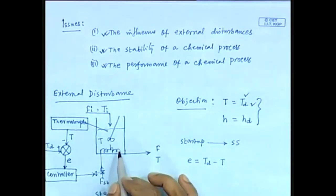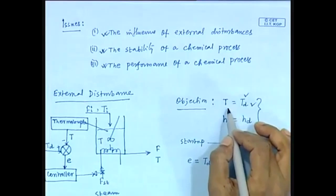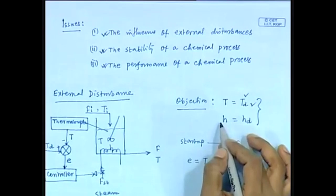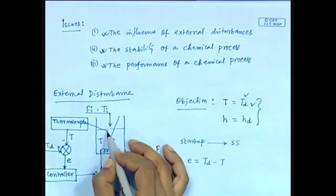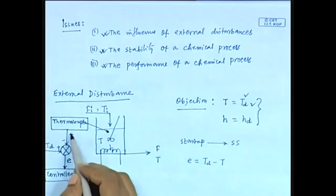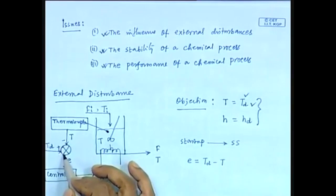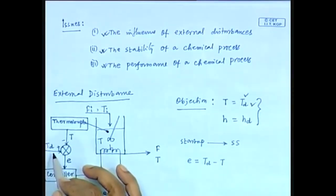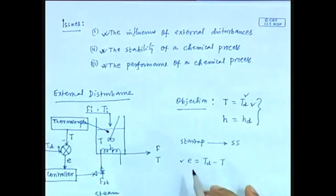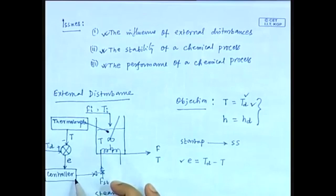In the heating tank system: the liquid temperature is measured using a thermocouple; that temperature is compared with the desired temperature T_d; the error E = T_d − T goes to the controller; and the calculated control action is implemented through a valve.